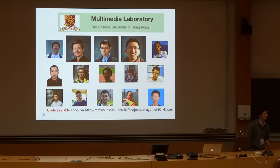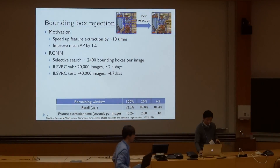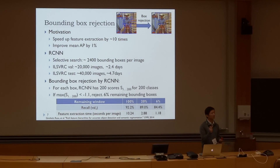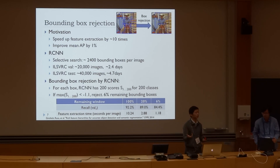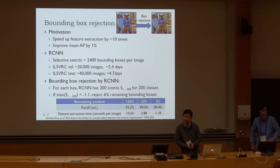Audience question about bounding box rejection options. We obtain 200 class scores from the network, and if the maximum of these 200 class scores is below a given threshold, we reject it. Currently we keep about 60% of the remaining bounding boxes, and we find it still improves the results. It is faster to train because there are fewer proposals, but we do have to cascade on this.